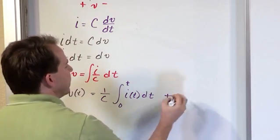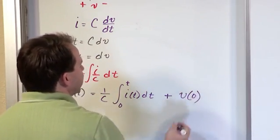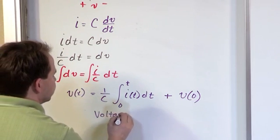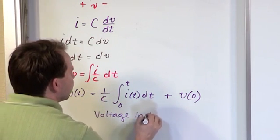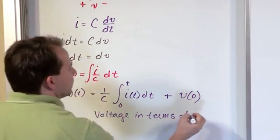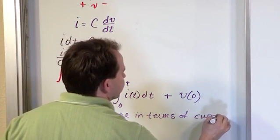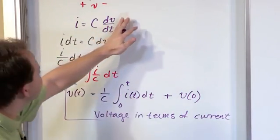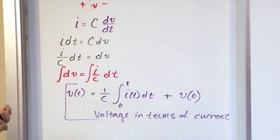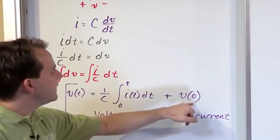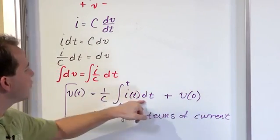And so that constant of integration is going to be the voltage at time zero. So this is the voltage in terms of a current. So in other words, for a capacitor, if I already know the voltage behavior, I can calculate the current by that derivative. When I flip it all around and solve for the voltage, then if I know the current and I know the initial value of the voltage, I can just integrate.